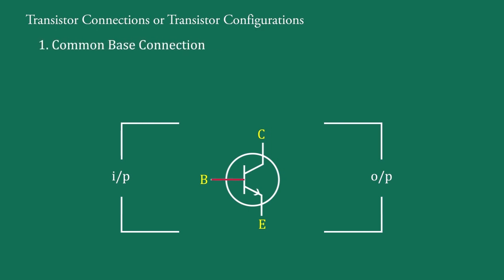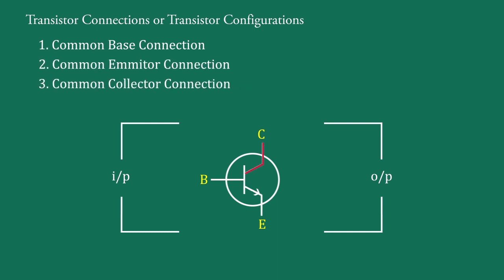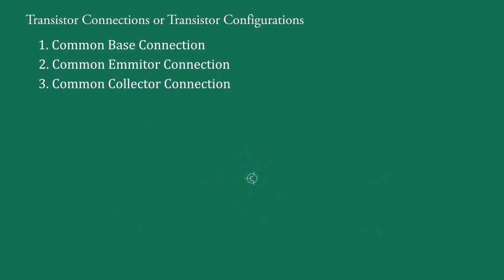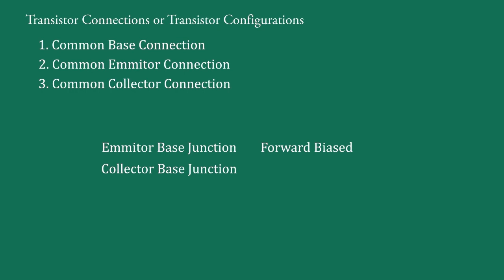Therefore the three configurations, that is connections of the transistor in a circuit, are: common base connection, common emitter connection, and common collector connection. When we make the connection, the emitter-base junction is always biased in the forward direction and the collector-base junction is always biased in reverse direction.